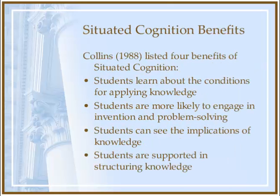Collins identified four benefits of using situated cognition as a learning model. First, students learn about the conditions for applying knowledge. Second, students are more likely to engage in invention and problem solving when involved in situated cognition. Third, students can see the implications of the knowledge they have gained. And fourth, as students are using their knowledge in context, they are supported in structuring knowledge in ways appropriate to later use.